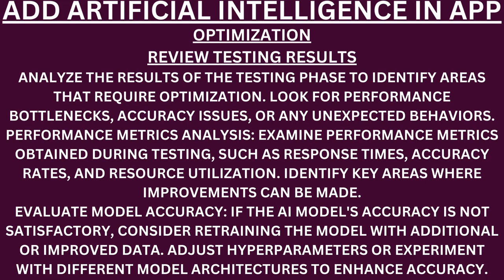Regular testing and continuous feedback loops contribute to the ongoing improvement of integrated AI components. Optimization. Review testing results. Analyze the results of the testing phase to identify areas that require optimization — look for performance bottlenecks, accuracy issues, or unexpected behaviors. Performance metrics analysis. Examine performance metrics obtained during testing such as response times, accuracy rates, and resource utilization. Identify key areas where improvements can be made. Evaluate model accuracy. If the AI model's accuracy is not satisfactory, consider retraining the model with additional or improved data. Adjust hyperparameters or experiment with different model architectures to enhance accuracy.